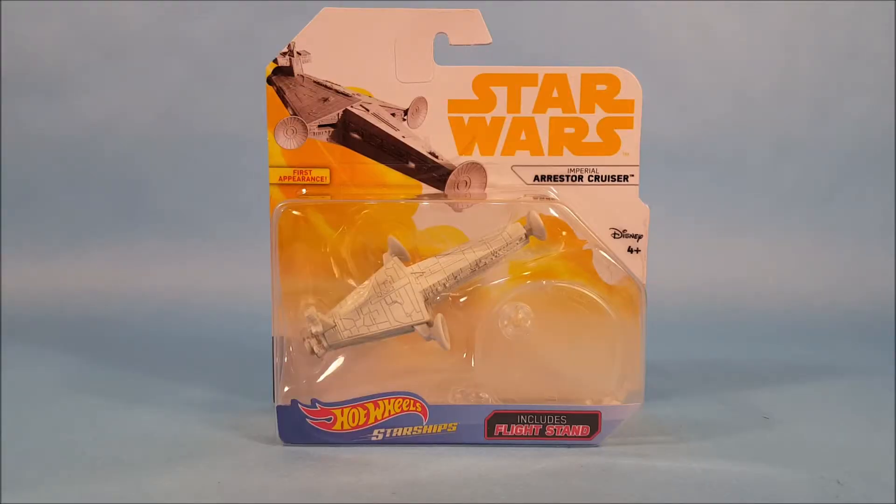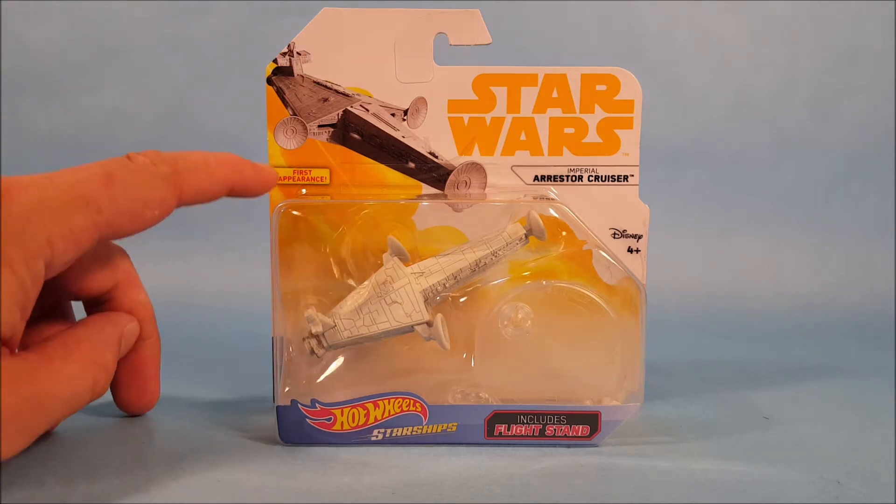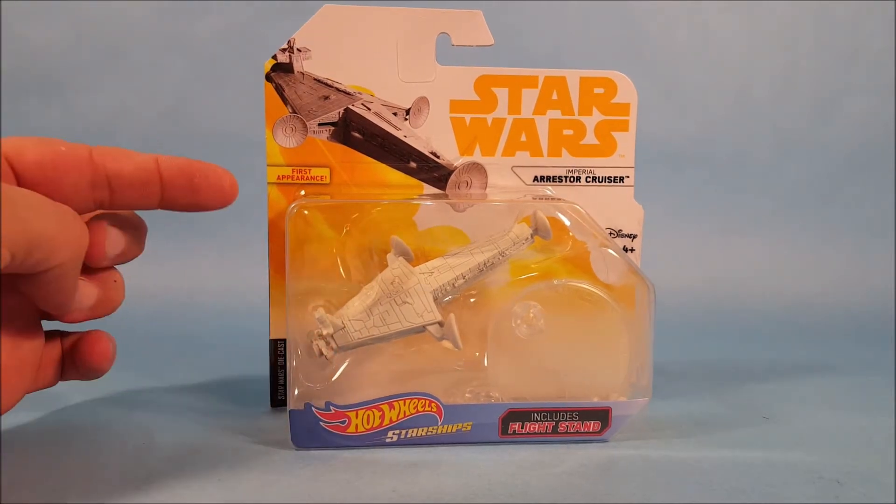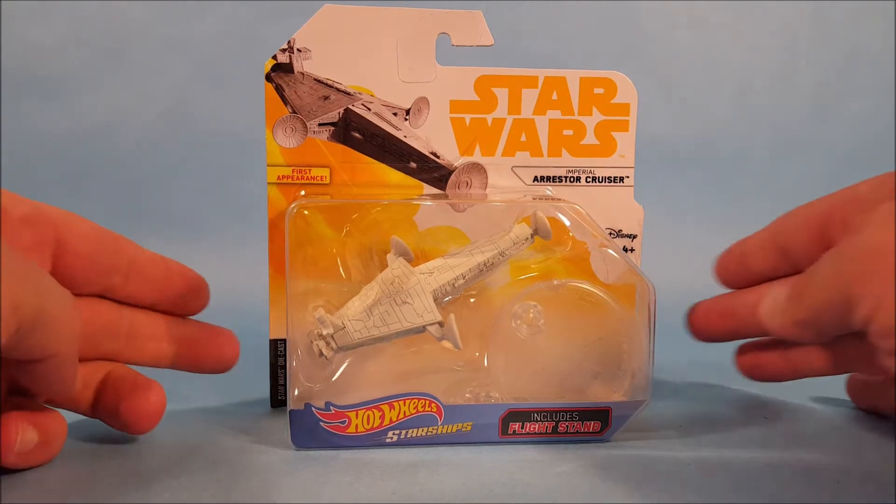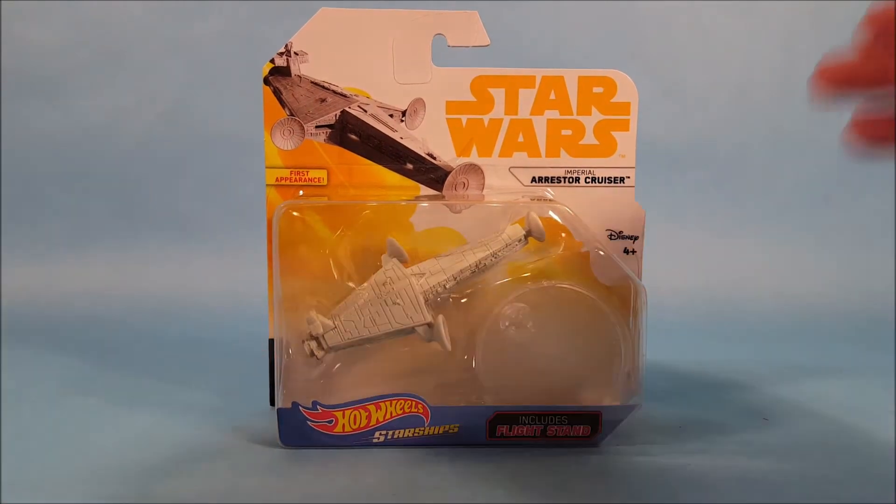Alright everybody, here we are today with a Hot Wheels Starship die-cast vehicle from the new Han Solo movie. This is an Imperial Arrester cruiser, and as you can see on the box here up in the corner, this is actually the first appearance of this vehicle when we're going to see it in the Solo movie.